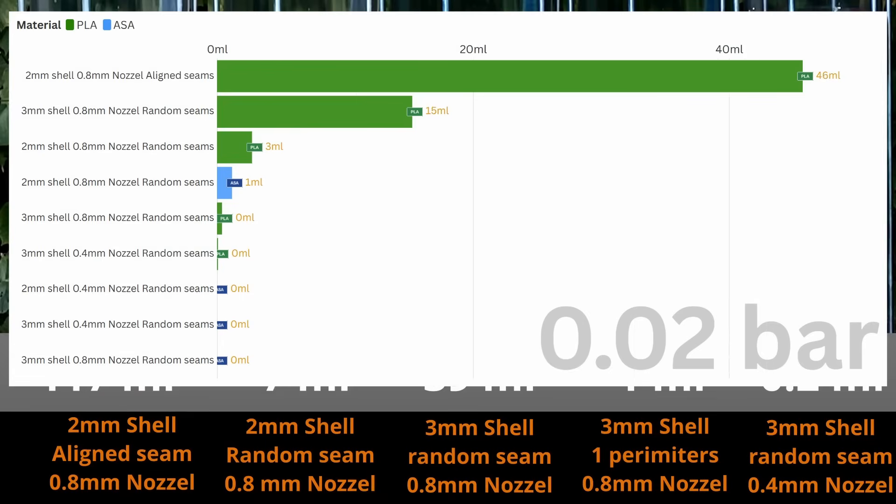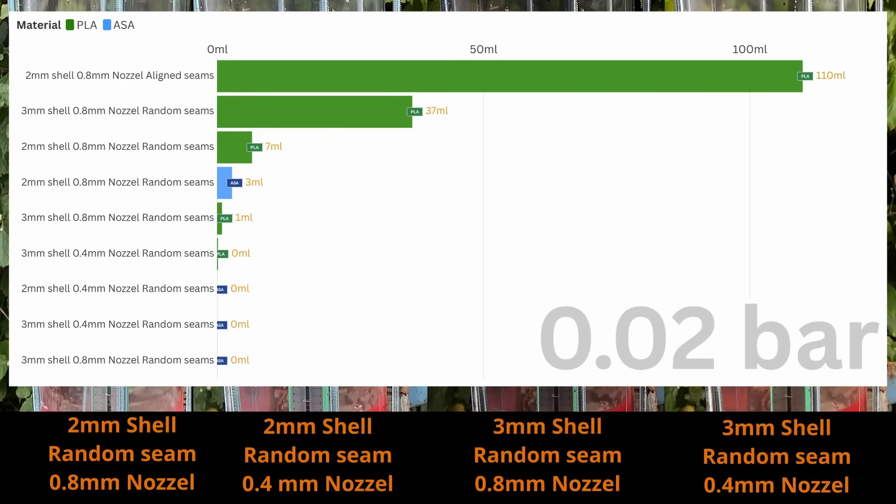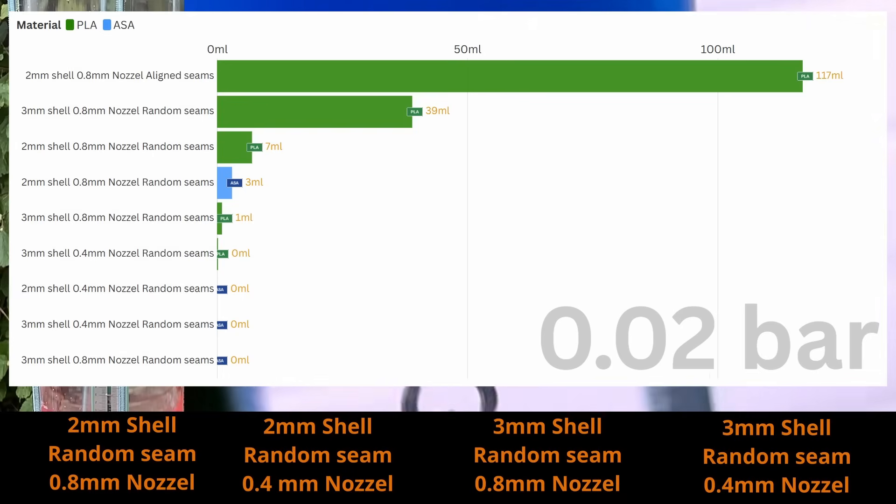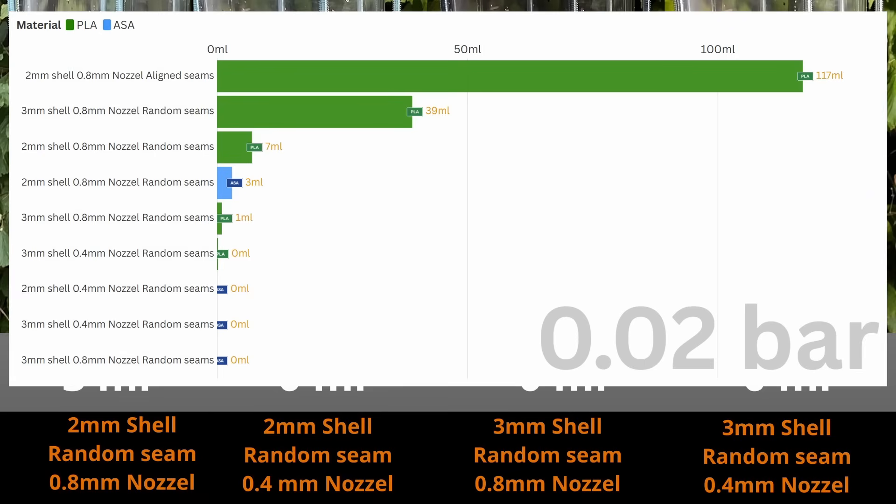ASA is already much better than PLA. 3mm seems to be better than 2mm hull thickness, and a smaller nozzle of 0.4mm seems to do better than a 0.8mm nozzle, as well as random seams trumping align seams. Even without using brick layers, the ASA samples are completely watertight at 0.02 bar.